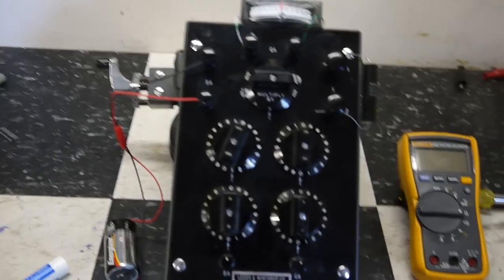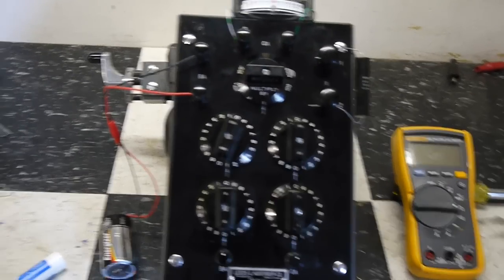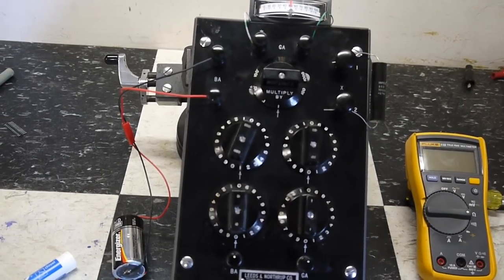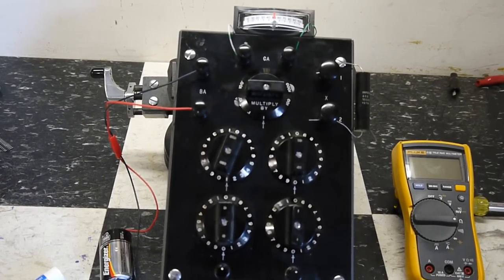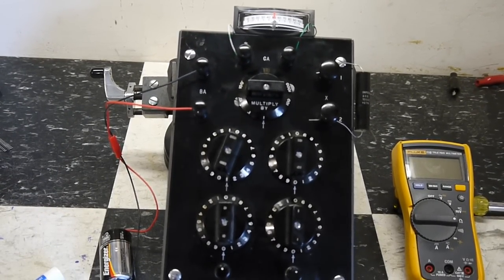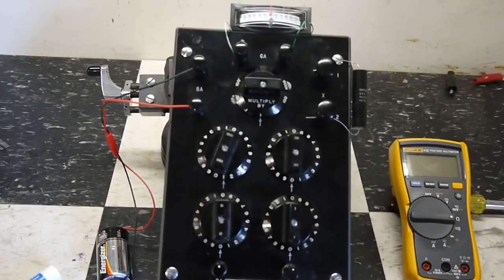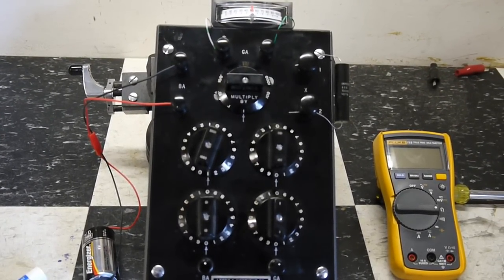So, this is the actual Wheatstone bridge that we'll be demoing. As you can see, it's a Leeds and Northrop, probably at least 60 years old, maybe older.